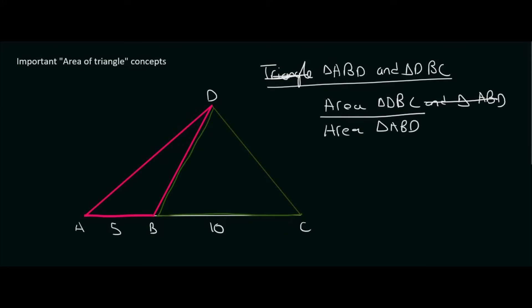We all know that the area of a triangle is half base times height and this base and height must be perpendicular to each other. For DBC, the green triangle, we can take its base as 10, so half times 10, but we don't really know its height.